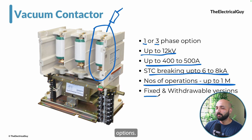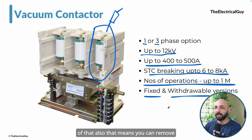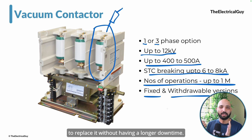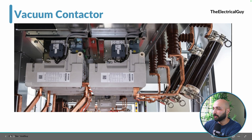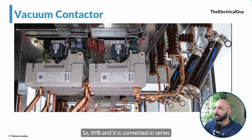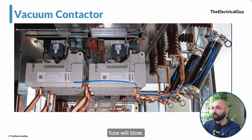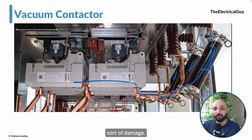Vacuum contactors are available in two variants: a fixed version installed permanently inside the panel, or a withdrawable version that can be removed from the panel for quick maintenance or replacement, minimizing downtime. A fuse can also be connected in series with the contactor — one fuse per phase — to provide short circuit protection. In the event of a short circuit, the fuse blows, and the contactor is protected from damage. You simply replace the fuse and reuse the contactor.